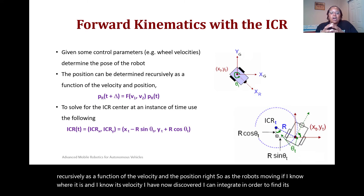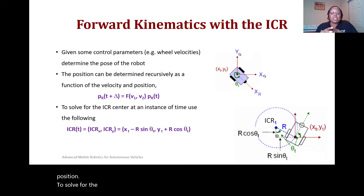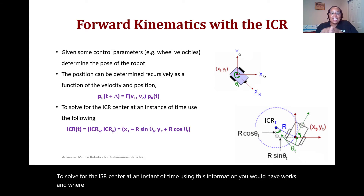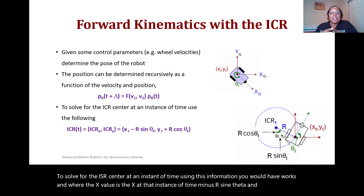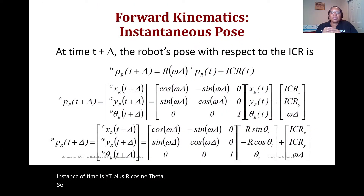To solve for the ICR center at an instant of time, you would compute ICR_x and ICR_y, where ICR_x equals x(t) minus R·sin(θ) and ICR_y equals y(t) plus R·cos(θ).